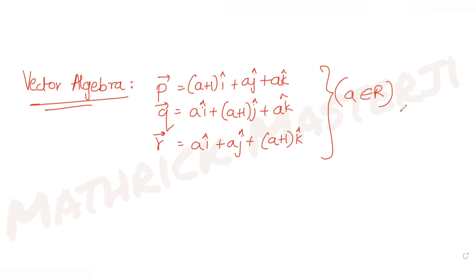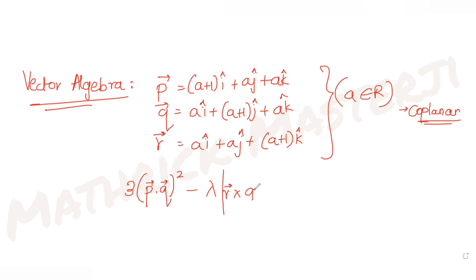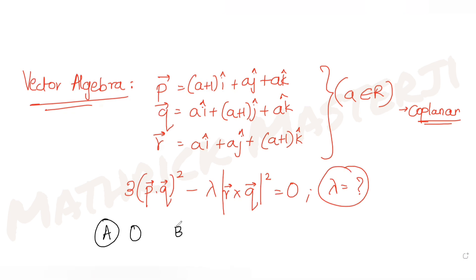They have told us these three vectors are coplanar. We know when vectors are coplanar the scalar triple product becomes equal to zero. They have also given one more condition: 3(p·q)² − λ|r×q|² = 0. We need to find the value of λ. The answer choices are zero, one, two, and three.